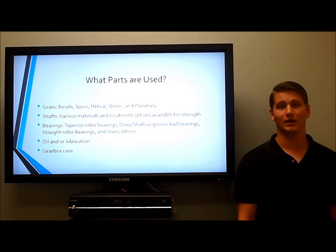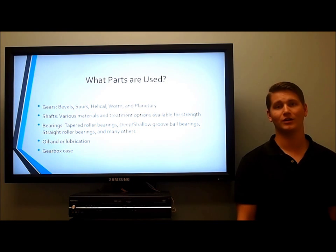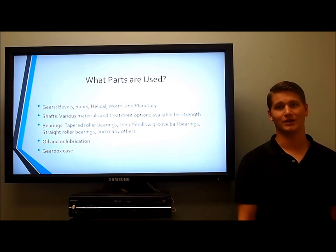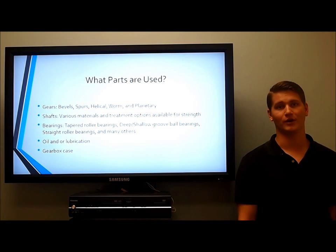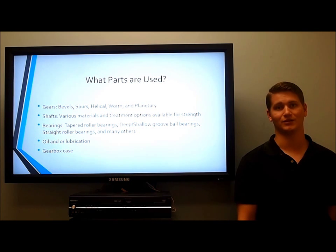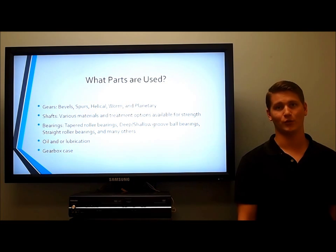What parts are used? First, gears. Bevels, spurs, helical, worm, and planetary gears are all examples of gears used within a gearbox. Shafts, which the gears are mounted on, can be made of various materials, and treatment options are available to aid the strength of the shafts. Bearings — tapered roller bearings, deep and shallow groove ball bearings, straight roller bearings, and many other types — are used to support the various shafts inside the gear system. Oil and lubrication are also used, as well as the gearbox case itself, which protects the entire system from outside contaminants.